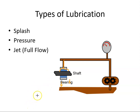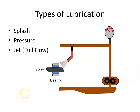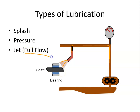The final type of lubrication we're going to look at is the jet type. Again, oil is taken from a tank and sucked in by a pump, then pumped at pressure through the engine. It then comes to an oil jet, where the oil is sprayed onto the bearing — it's a full flow system.